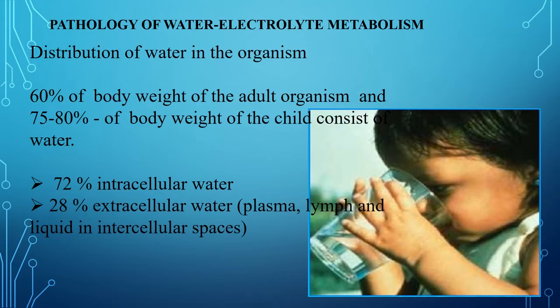Water is the main component of the body — 60% of adult body weight and approximately 80% of the child's body weight. The daily requirement is 2 to 2.5 liters. In early childhood, the body's need for water is two to three times greater than in adults. With age, the total volume of water in the body decreases.